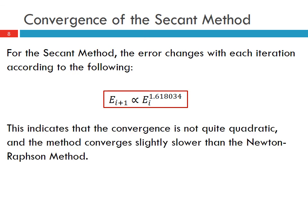This indicates that the convergence is not quite quadratic, so the method converges slightly slower than the Newton-Raphson method but it still converges relatively fast. If you want to see the details of how we arrived at this, you can take a look at the derivation on the website notes, the Samur Adib website notes.